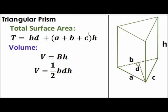For its volume, again it's area of the base times height. Being a triangle, the area of the base is 1/2 times BD, with the height denoted by H. Therefore, the volume of the triangular prism is equal to 1/2 times BDH. I hope you learned something from this video. Thanks for watching!